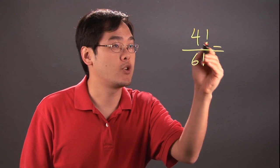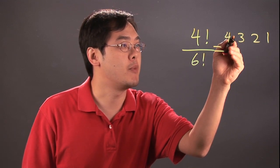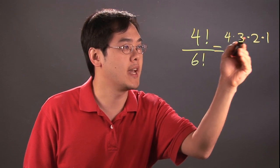In other words, 4 factorial is really 4 times 3 times 2 times 1, and you're multiplying all of those numbers together.